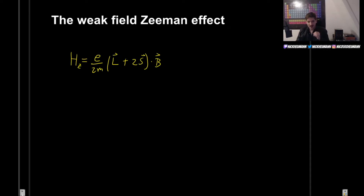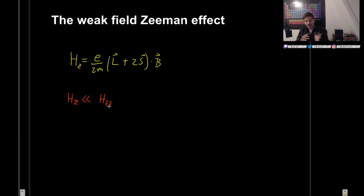In this first case, we will assume that the Hamiltonian that arises from the Zeeman effect is going to be much smaller than the one we previously saw for the fine structure. This means that we can then treat the Zeeman Hamiltonian as a perturbation to our hydrogen atom system.